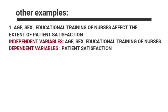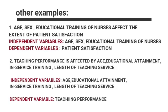Now let us proceed to other examples. Number one: age, sex, and educational training of nurses affect the extent of patient satisfaction. In another example, the independent variables are age, educational attainment, in-service training, and length of teaching service, while the dependent variable is teaching performance.